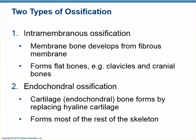One way is called intramembranous ossification and the other is called endochondral ossification. Intramembranous means 'within a membrane' — the prototype of the bone is a connective tissue sheet, and bone forms within that sheet. The bones produced this way are flat bones, including all the bones of the skull and the clavicles.